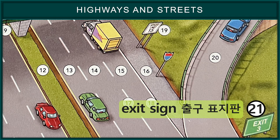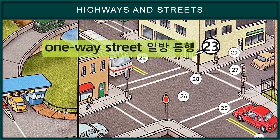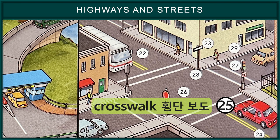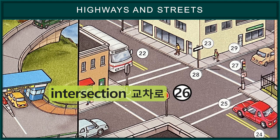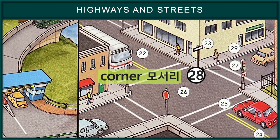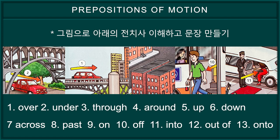Exit sign. Street vocabulary: one-way street, double yellow line, crosswalk, intersection, traffic light, traffic signal, corner, block. Prepositions of motion.